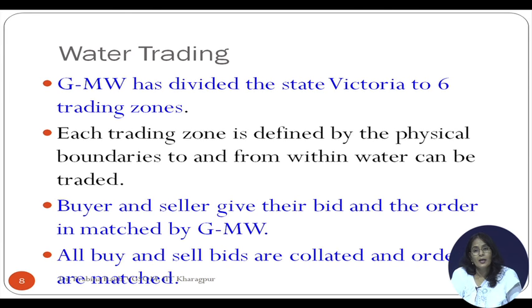The risk is that if a seller underestimates its own water requirement and has already sold it, it may face water scarcity. Conversely, if rainfall occurs and water needs are lower, the seller gains from the transaction. Order matching is done by the Goulburn Water Authority, collating all buy and sell bids. Currently no futures contracts exist for water, but it is only a matter of time before forward or futures contracts allow bulk consumers and municipalities to lock in water prices at an early stage. Thank you.